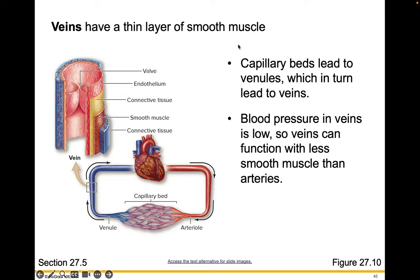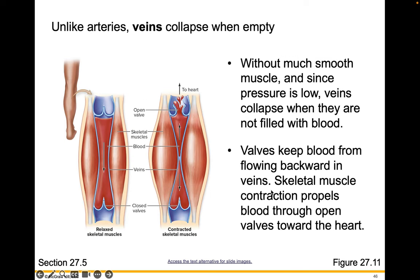Veins, in contrast, have a thin layer of smooth muscle tissue. Capillary beds lead to venules, which in turn lead to veins, and blood pressure in the veins is low — so veins can function with less smooth muscle than arteries. Unlike arteries, veins collapse when they're empty. Valves keep blood from flowing backward in veins, and skeletal muscle contractions propel the blood through open valves towards the heart. So exercise helps that blood keep moving.